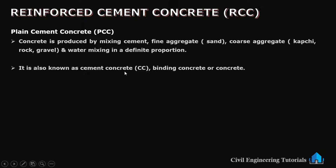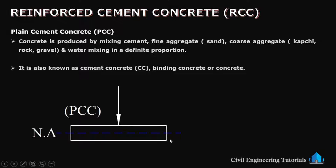Plain cement concrete is also known as cement concrete, binding concrete, or simply concrete. It is produced by mixing cement, fine aggregate (sand), coarse aggregate (kapchi, rock, or gravel), and water in a definite proportion. Now we will discuss why we use reinforcement — why we use RCC — in plain cement concrete.